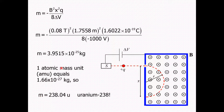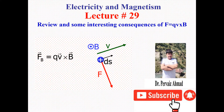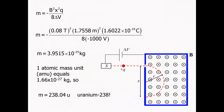Converting to atomic mass units, where 1 u = 1.66×10⁻²⁷ kg, the mass corresponds to approximately 238 atomic mass units — identifying the particle as Uranium-238. That's all for this lecture. Bye bye.